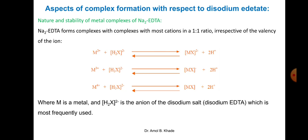Now we will see the aspects of complex formation with respect to disodium EDTA, since it is the most widely used complexing agent. Considering the nature and stability of metal complexes of disodium EDTA: disodium EDTA forms a complex with most cations in a 1:1 ratio, irrespective of the valency of the ion.